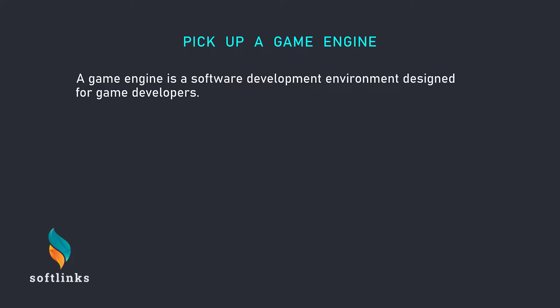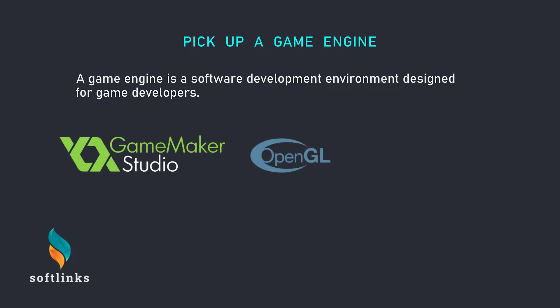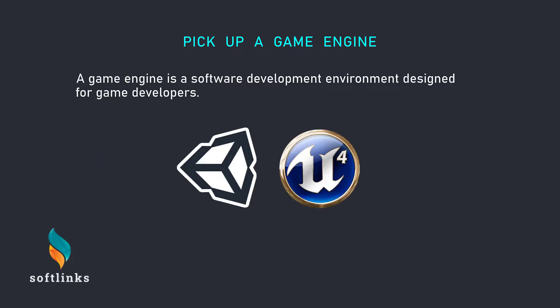Secondly, you should pick up a game engine, also known as a game architecture or game framework. A game engine is a software development environment designed for game developers. There are many game engines available such as GameMaker, OpenGeo, Unity, Unreal Engine, and more — but I would recommend going with Unity or Unreal Engine since they are the most powerful tools. Unity uses C# whereas Unreal Engine uses C++.